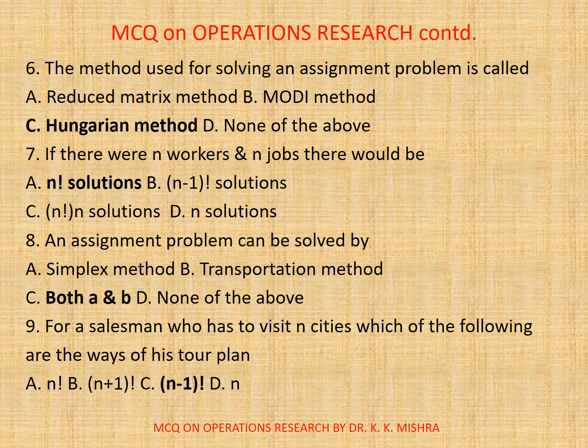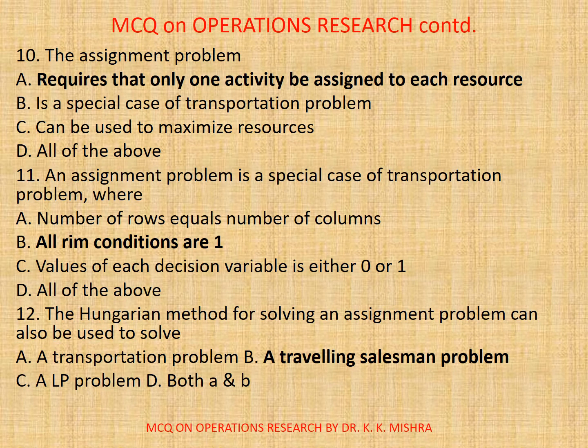Question 9. For a salesman who has to visit N cities, which of the following are the ways of his tour plan? A. Factorial N. B. N plus 1 factorial N plus 1. C. Factorial N minus 1. D. N. The correct option is C: Factorial N minus 1. Question 10. The assignment problem: A. Requires that only one activity be assigned to each resource. B. Is a special case of assignment problem. C. Can be used to maximize resources. D. All of the above. The correct option is A: Requires that only one activity be assigned to each resource.